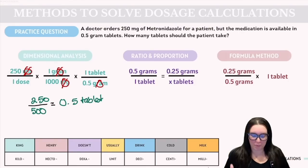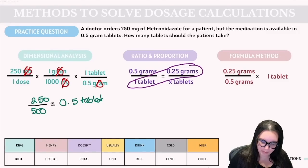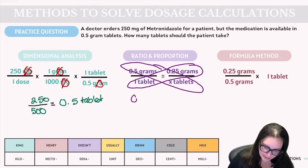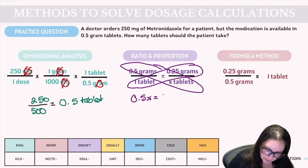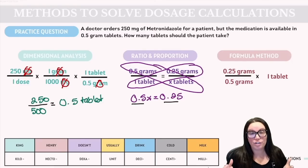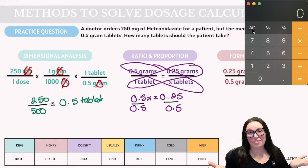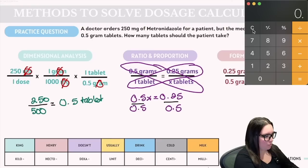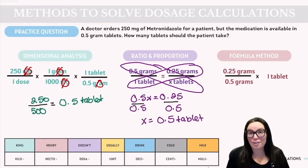Next, let's look at ratio and proportion. We cross multiply everything on the top of one fraction by the bottom of another. So we have 0.5 grams times x tablets — that's what we're trying to figure out — equal to 0.25 grams times one tablet. We then isolate x by dividing each side by 0.5. Dividing 0.25 by 0.5 gives us the correct answer of 0.5. Note that with ratio and proportion and the formula method, you need to convert units before plugging them into your equation.